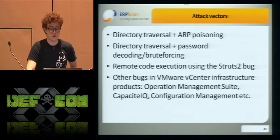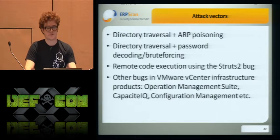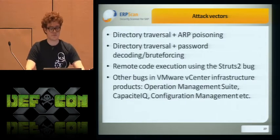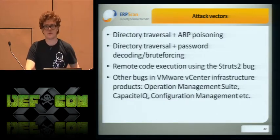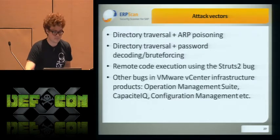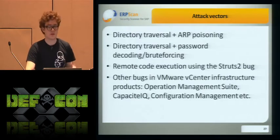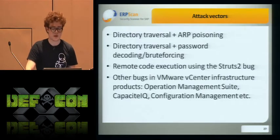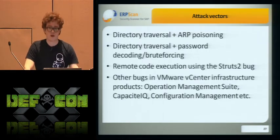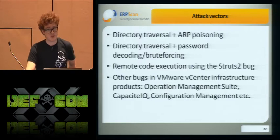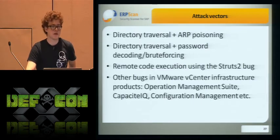So there are four attack vectors against vCenter: directory traversal and ARP poisoning; directory traversal and password decoding for Orchestrator; and remote code execution using the Struts bug. Also, there are a lot of infrastructure products that integrate with vCenter — like Operations Management Suite, Capacity, and Configuration Management — and they all have some sort of credentials for vCenter, so there may be additional vulnerabilities in those systems.